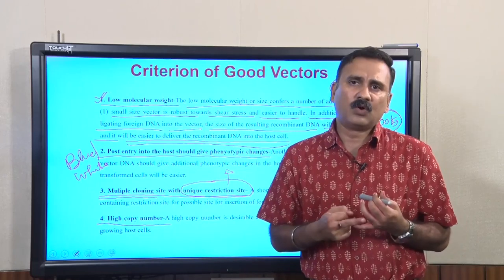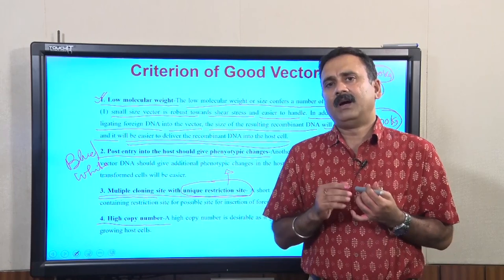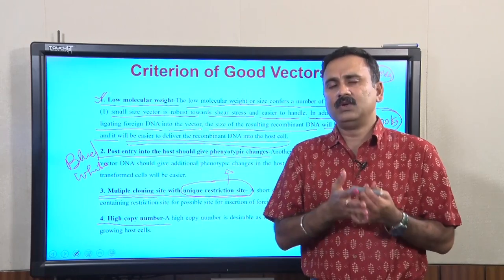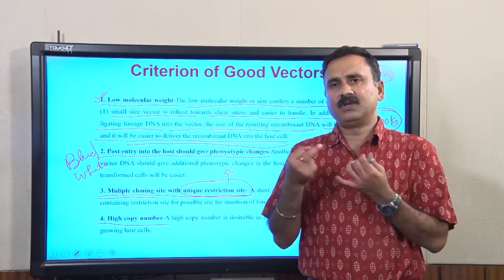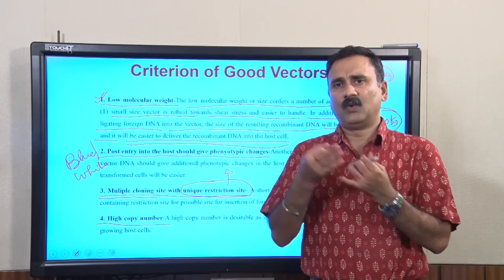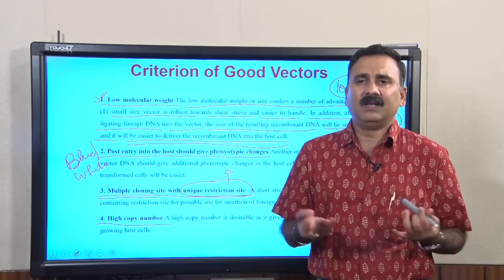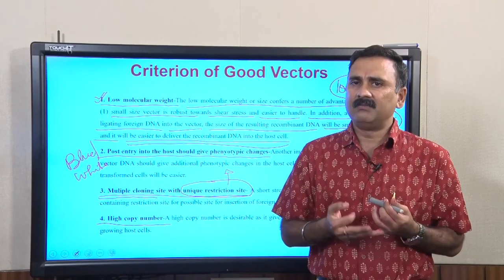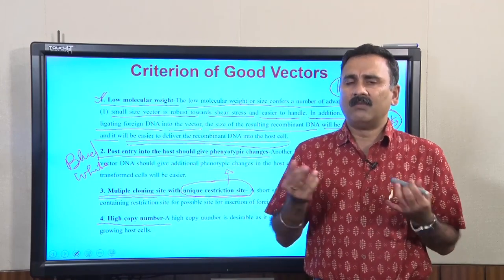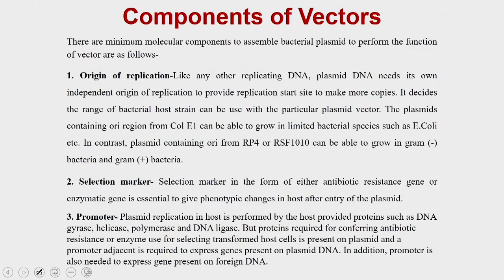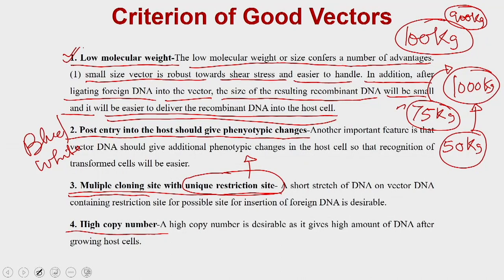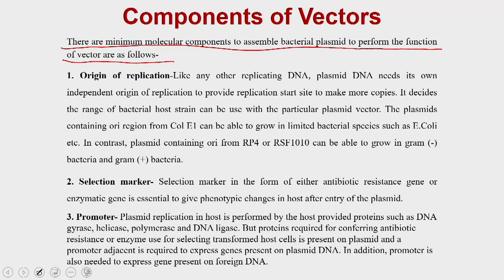In general, if you are using vectors for cloning purposes — not for overexpression or protein production — it is always desirable to use a vector with high copy number, as it gives you more DNA at the end. Taking these criteria into account, a vector must have a minimum number of molecular components to perform its function.